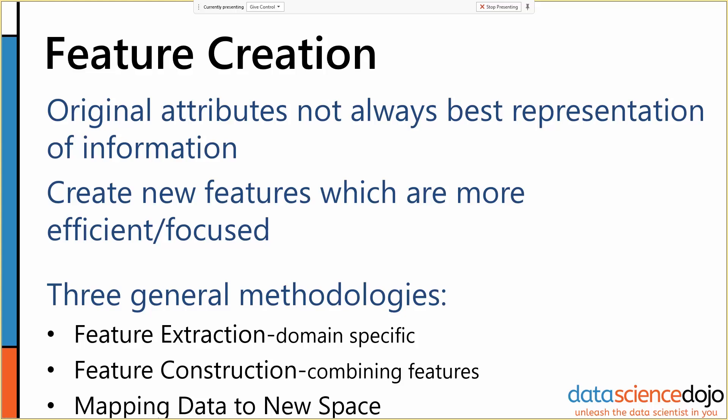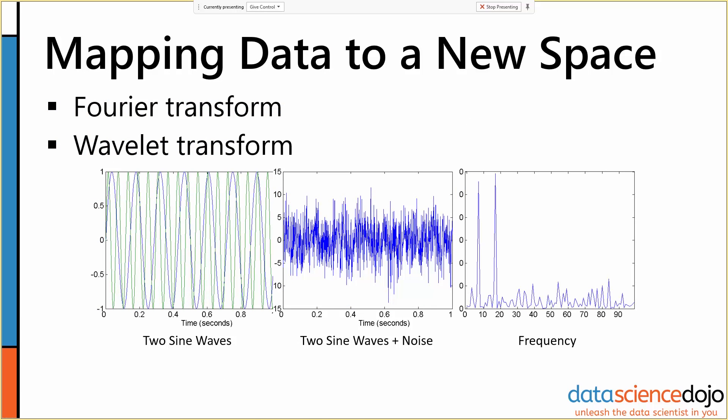Last, and really mostly least because we don't do this that much, is mapping data to a new space. Those of you from a scientific background are probably familiar with the Fourier transform, which takes data that is in the time domain and converts it to be in the frequency domain, allowing you to pick out different pieces of information. We don't do this kind of transformation that much in data science, because it tends to require transforming the entire data object. But it is something to have in the back of your head, because there are some times you really do want to do a massive transformation like this — particularly in an anomaly detection time series context, where you might want to take a Fourier transform of your data.